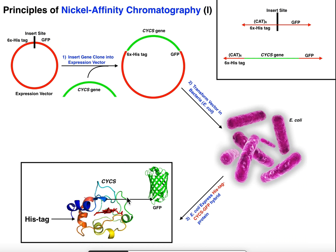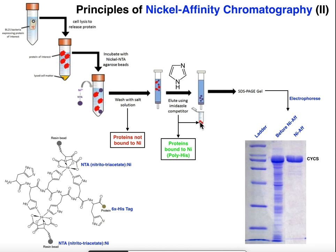The eluted fraction should contain essentially just the protein with the polyhistidine tag — so now I've isolated my cytochrome c. I now have two fractions: one with the polyhistag protein (my cytochrome c), and one with all the other proteins that didn't have the histag and washed out with the salt solution. If I run these through SDS-PAGE, the pre-separation sample shows all proteins, but the histag fraction shows mostly just my protein of interest.